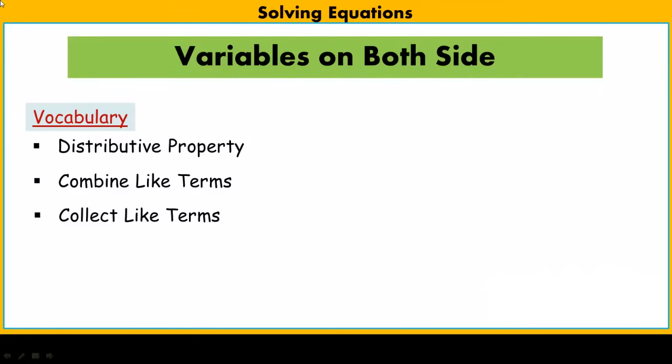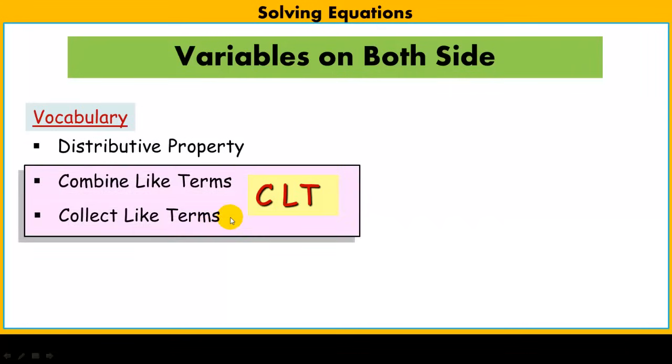Today's lesson will be solving equations with variables on both sides of the equation. We'll use some vocabulary: distributive property, combining like terms, and collecting like terms. One abbreviation I use a lot is CLT, and that's going to apply to both combining and collecting like terms. They're very similar, and we'll talk about that in the upcoming.